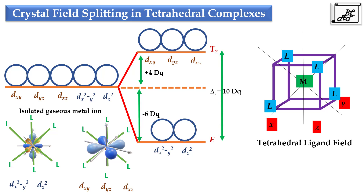This is because the tetrahedral ligand field does not have a center of symmetry. In case of octahedral ligand field, the ligand field is symmetric and has a center of symmetry, therefore they are called as gerades and we use the terms t2g and eg. But in case of tetrahedral ligand field, we use the terms t2 and e as it does not involve the presence of a center of symmetry.